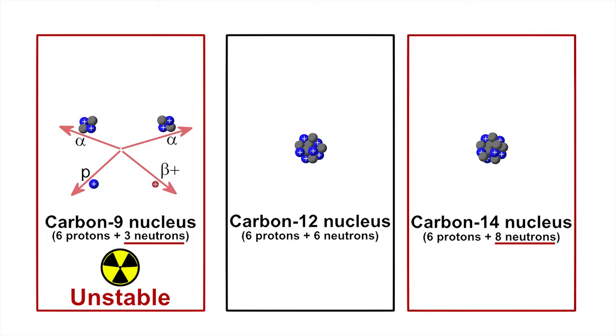Isotopes with too many neutrons are also unstable because any neutrons that are in excess of what is required to stick the nucleus together can themselves break down, changing into protons and at the same time emitting radiation.